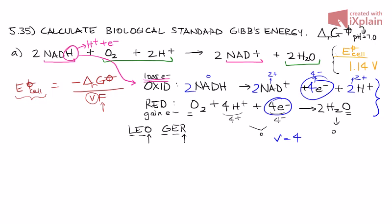Lastly, we can put this all into the formula. The cell potential is 1.14 volts equals negative delta G over V, which is 4, and F, which is Faraday's constant, 96,485 coulombs per mole.